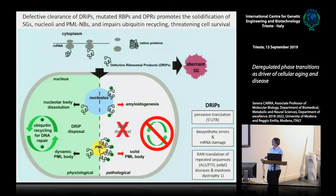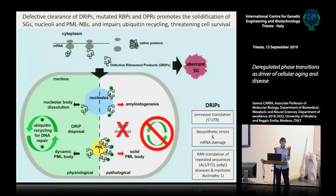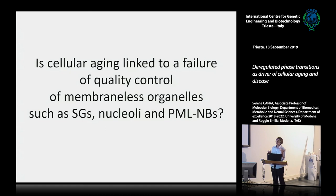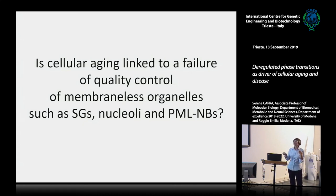To summarize, I showed a tight cross-talk between protein quality control and the dynamics of certain membrane-less organelles taking increasing importance in ALS pathogenesis — stress granules, nucleoli, and PML bodies. DRiPs and misfolded proteins can accumulate at stress granules converting them into an aberrant state, and at nucleoli and PML bodies converting them into an amyloid-like state. If not resolved, this can impact the ability of the nucleus to recycle ubiquitin to maintain genome stability. This raises the general question: can we say that cellular aging is linked to a failure of quality control of membrane-less organelles such as stress granules, nucleoli, and PML nuclear bodies?